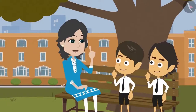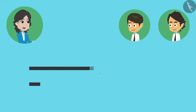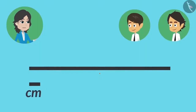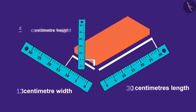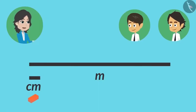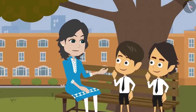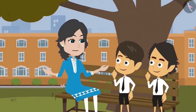Different units of measurement are required because lengths are different. Centimeter is very small, therefore it is used to measure small lengths. But to measure bigger lengths, meter is used. We measured a break in centimeters. Can we measure a break in meters too? No, a break is small therefore it cannot be measured in meters.